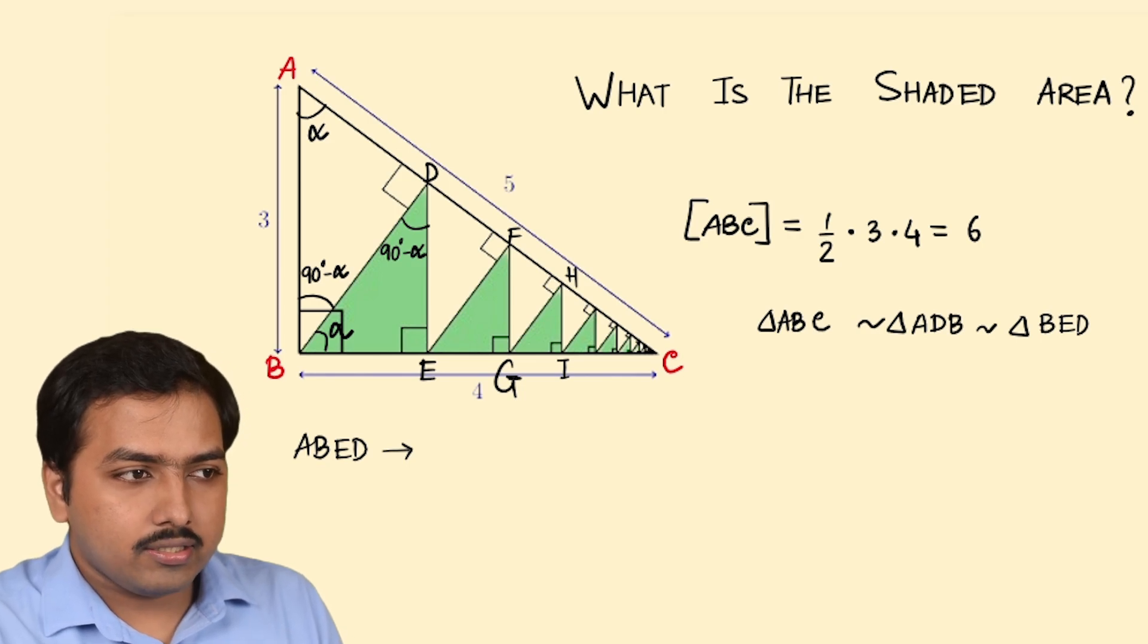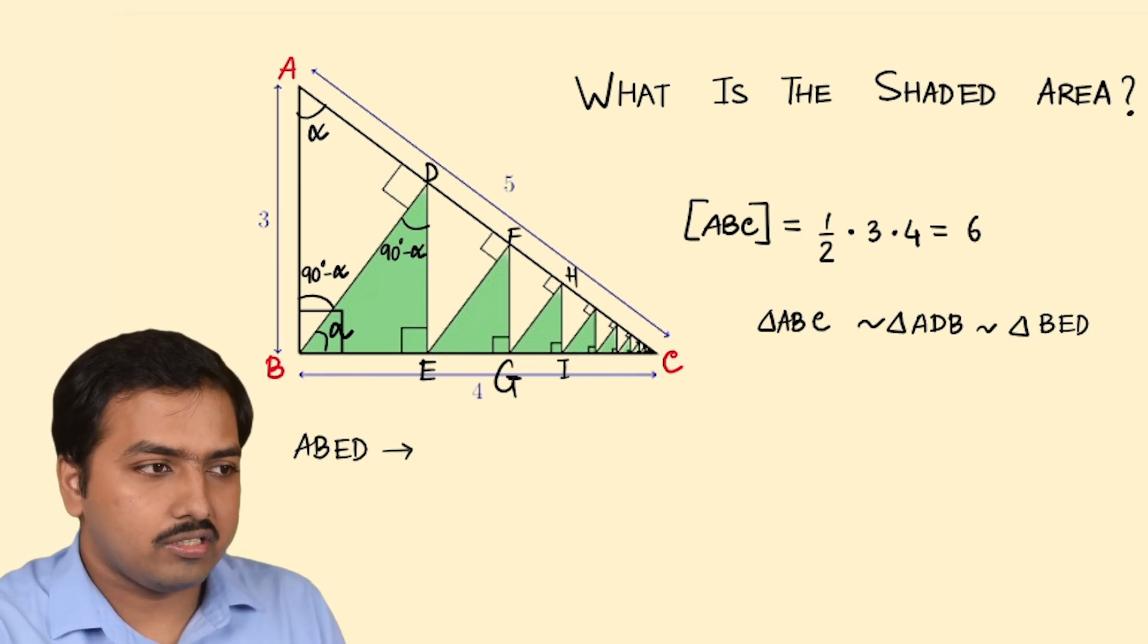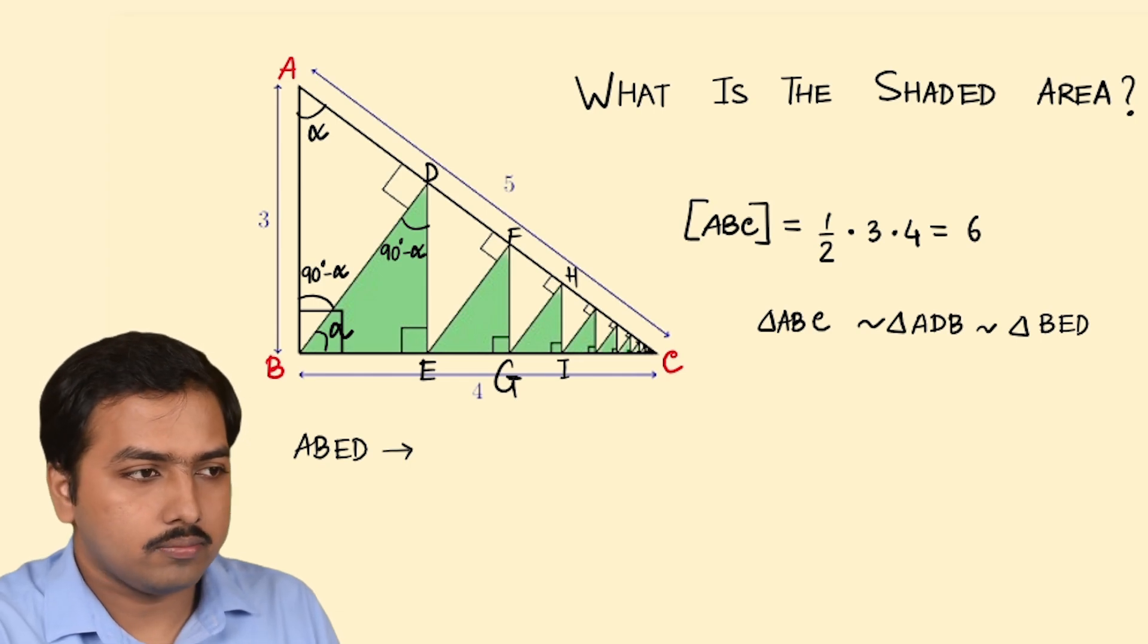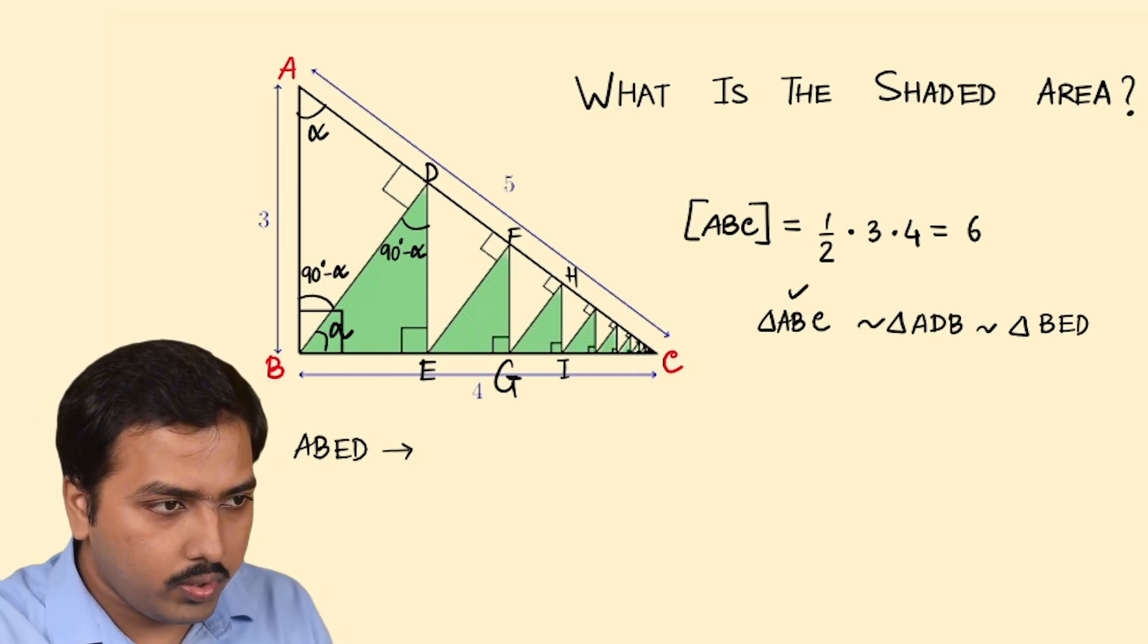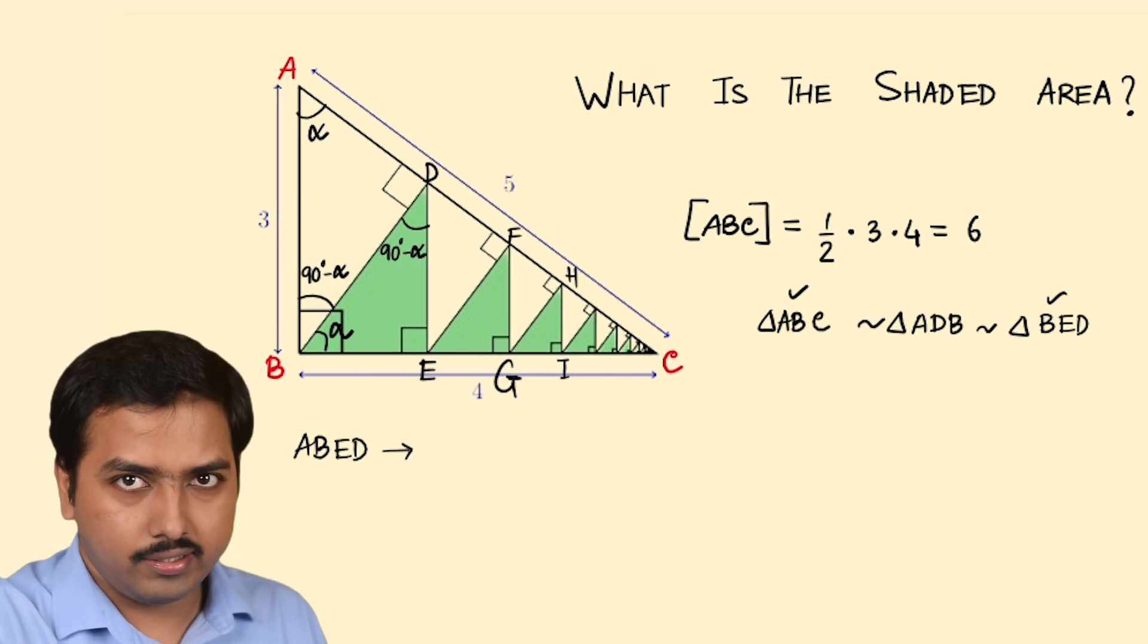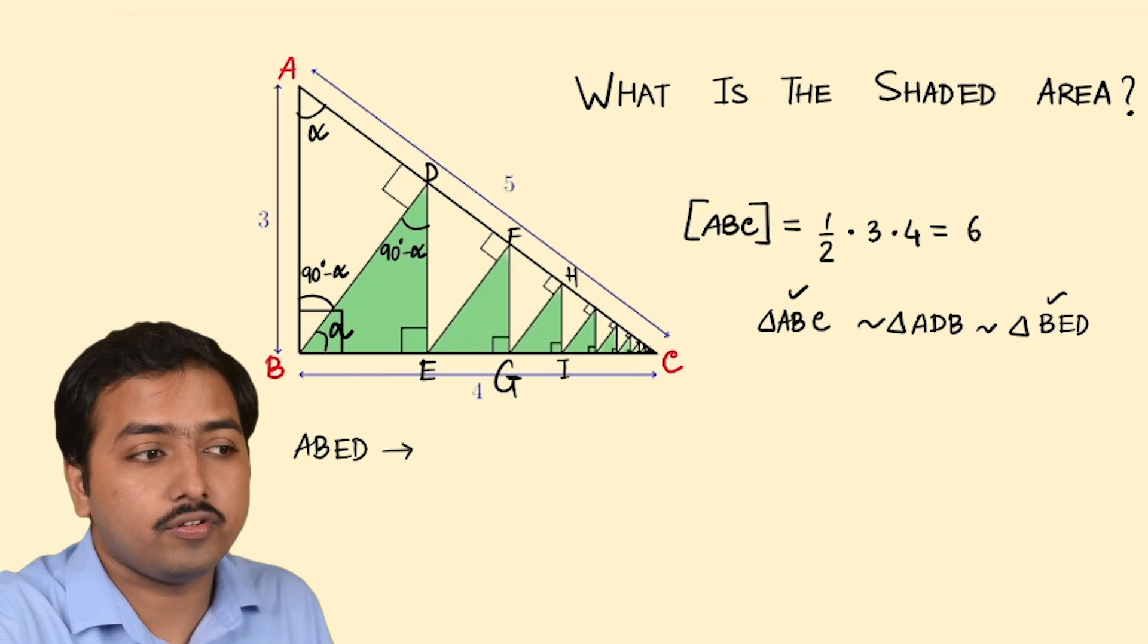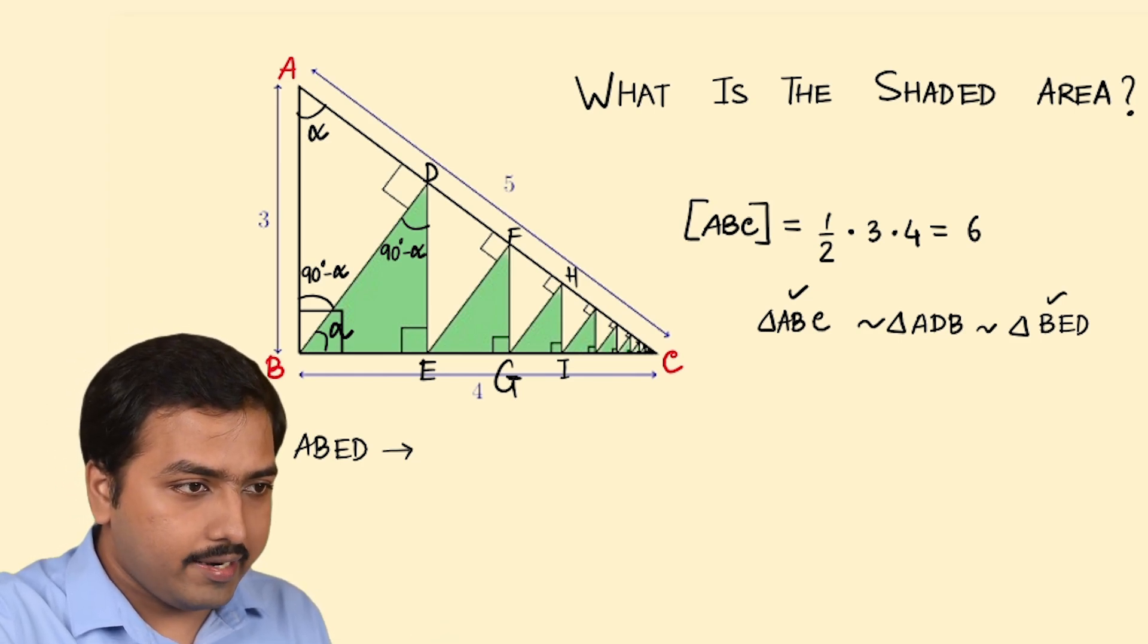So for the similar triangles the main output we can get is the ratio of the corresponding sides are equal. So let's take these two triangles and use that property of similar triangles. Ratio of the corresponding sides will be equal so on that